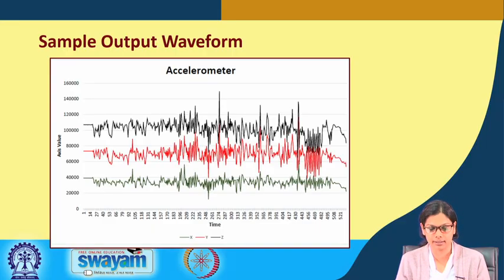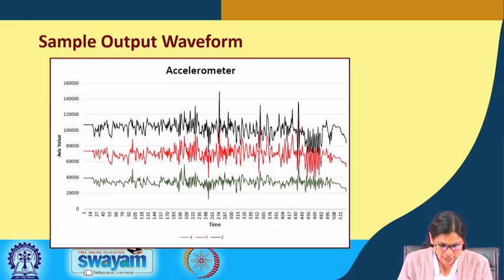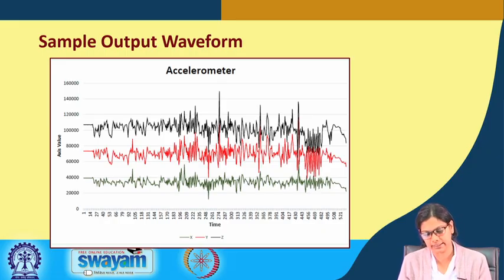Finally, the plot looks somewhat like this. This is the sample output waveform from the accelerometer. This is the x axis, y axis and z axis value, this is how it is changing. There are certain spikes as well we can see here. This is how this particular plot looks like when we use the accelerometer and we move it up and down or in any position.